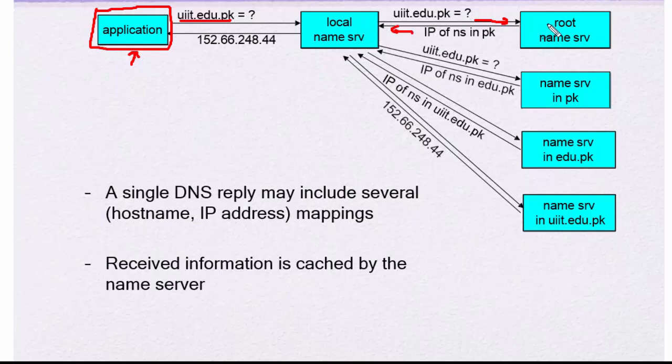At first it moves towards the root name server, which has the IP of name server in .pk, so it moves towards the .pk server where .pk is present.